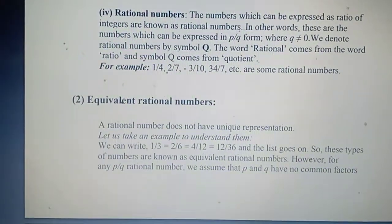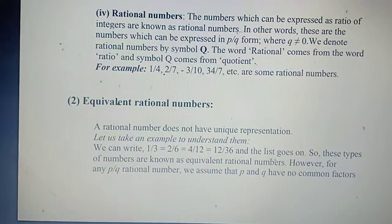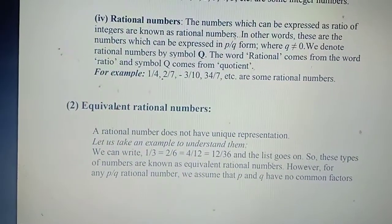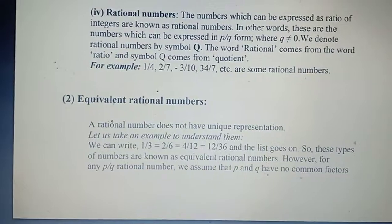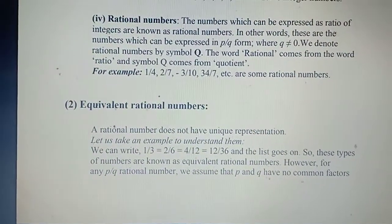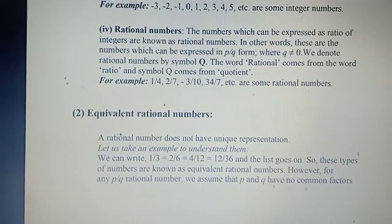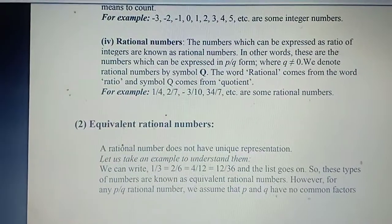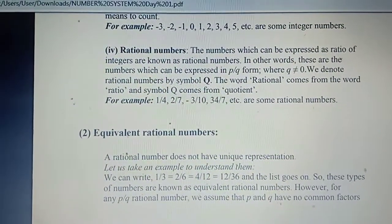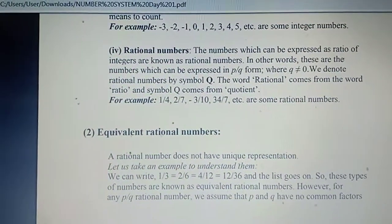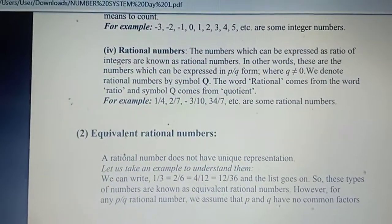Here are some examples of rational numbers: 1/4, 2/7, −3/10, and 34/7. One important thing to note is that 0 is also considered to be a rational number.